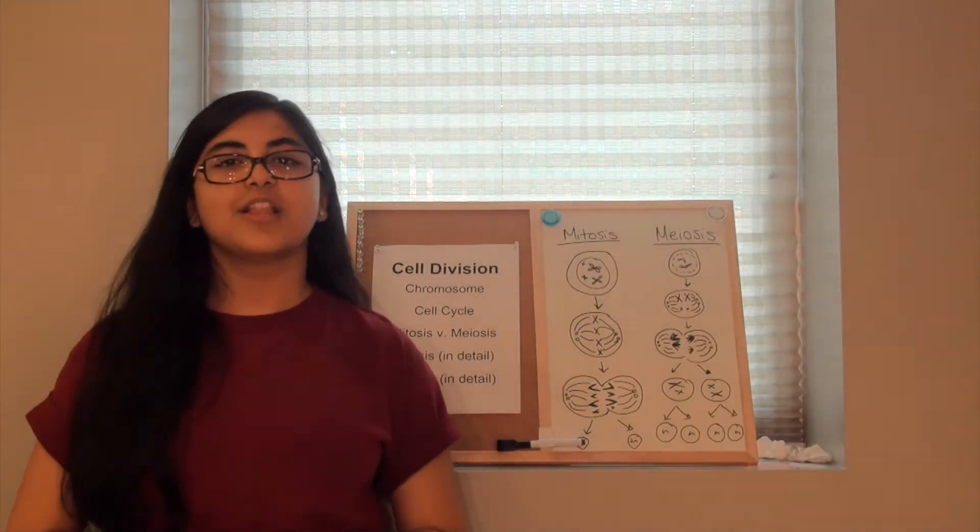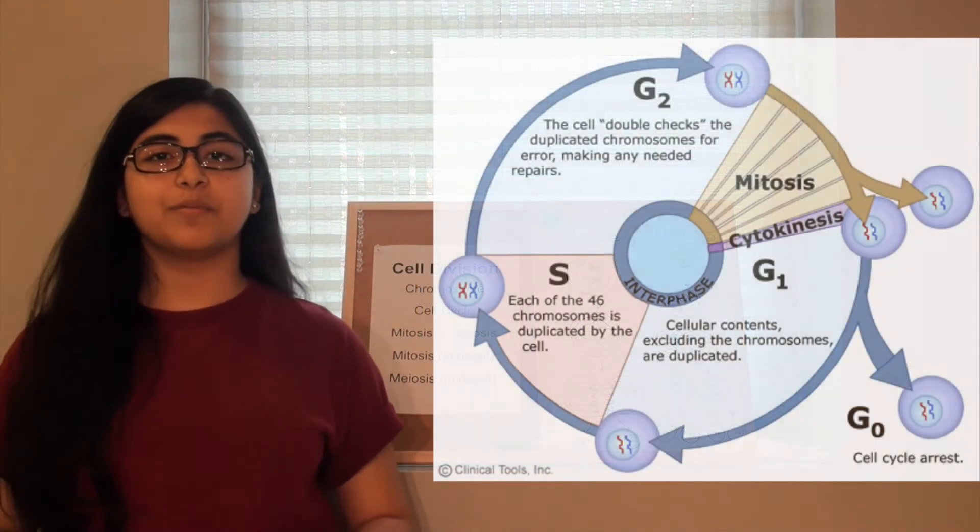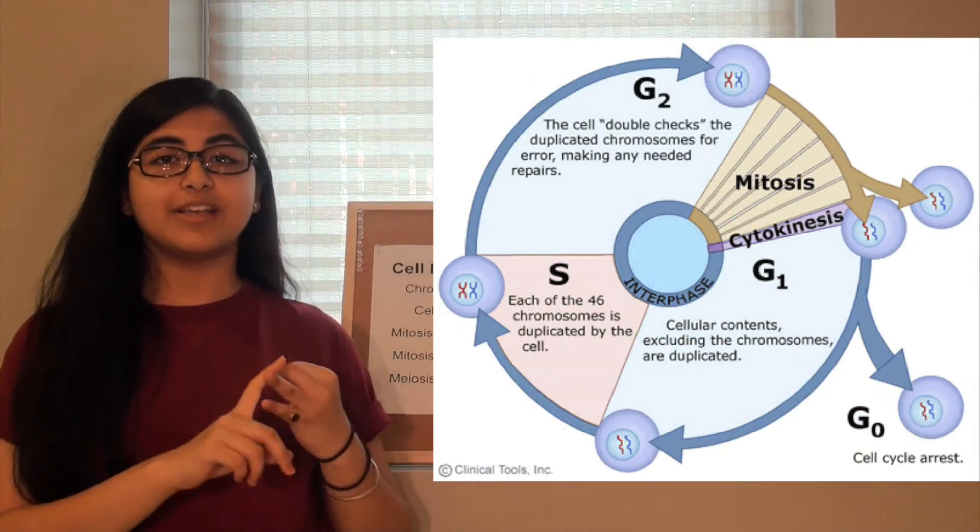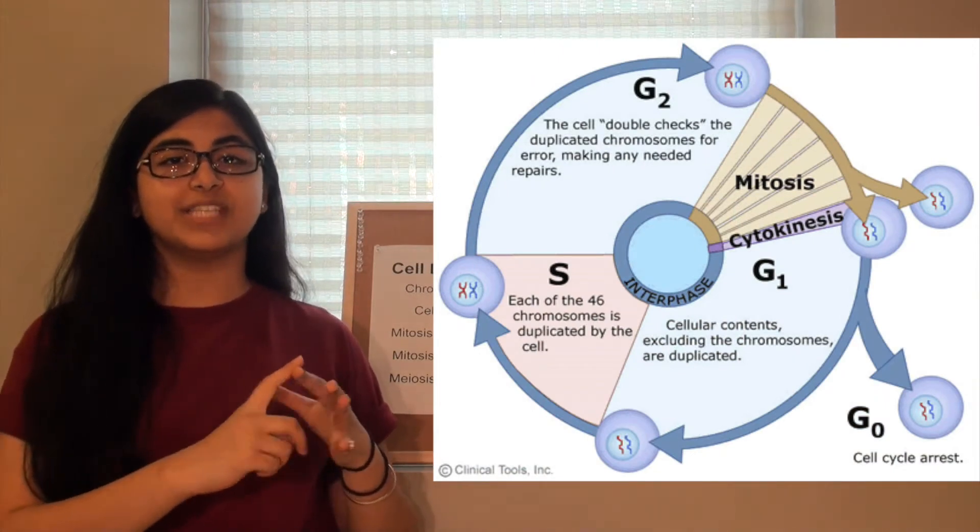Now that you know what a chromosome is, let's move on to the cell cycle. The cell cycle is composed of G1, S, G2, mitosis, and cytokinesis.